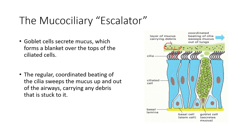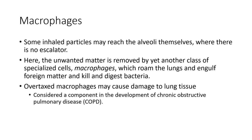The mucociliary escalator can be impaired in patients who are on anesthesia or high amounts of opioids — which is why we often see patients with congestion after major surgery. Down in the lower airways, we don't want a lot of mucus, as the airways are smaller and we don't want obstructions during gas exchange. Since there is no escalator there, we use macrophages to keep our lower airways clean. These specialized cells engulf foreign matter, kill and digest bacteria — serving as our second line of defense.